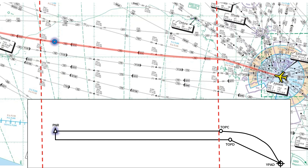My rule for common fixes is: the fix should not be less than 30 miles or more than 300 miles before the PNR position. Looking at the map, the PNR lies somewhere between Fillet and Flake — specifically 129 miles past Fillet. This is our estimated PNR position. Since 129 miles fits nicely between 30 and 300 miles, Fillet is a very good common fix. From Fillet to the PNR is 129 miles — that works perfectly.